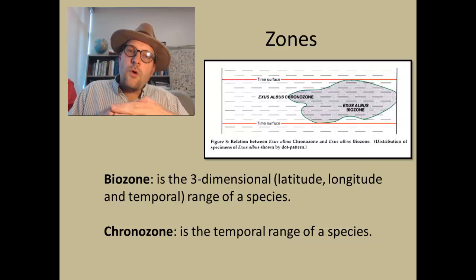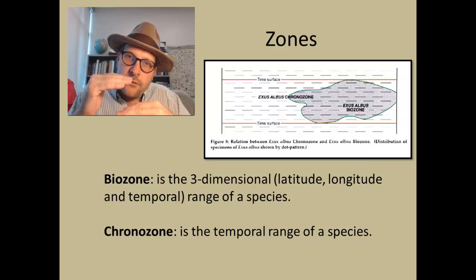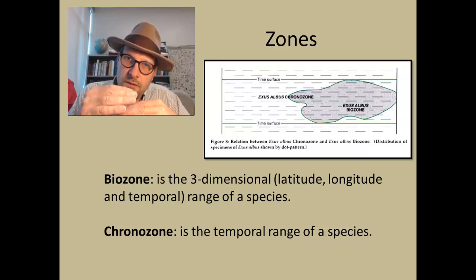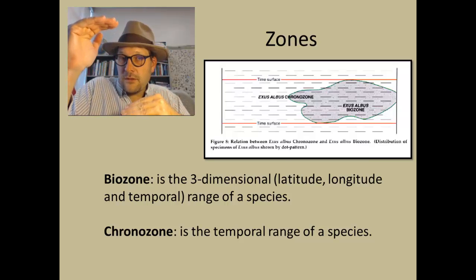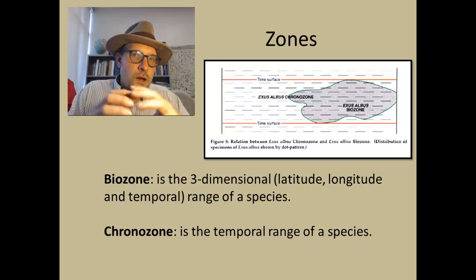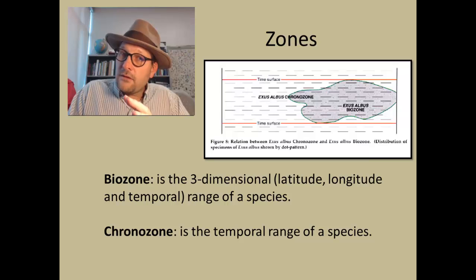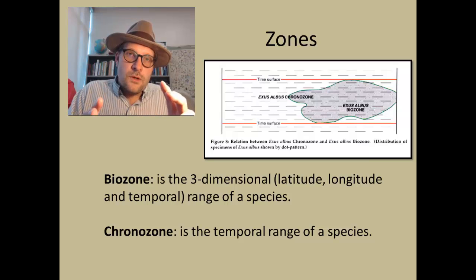A chronozone is only the temporal range of a species — where we get the very first occurrence of the species in the stratigraphic record, and where we get the last appearance of that species. Biozone and chronozone are fundamentally different: a biozone tracks different facies, so if a species likes to live in the desert, it will be found in desert depositional environments and may not be found in beach deposits. A chronozone simply defines that time period.